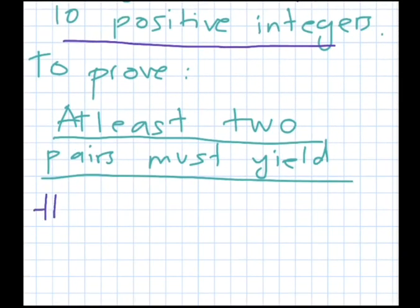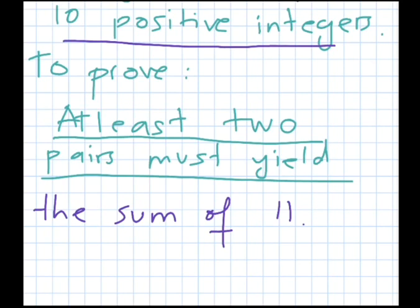We have to prove that at least two pairs must yield the sum of 11. So what we have to prove is: if we choose seven numbers from one to ten, at least two pairs out of them should yield the sum of 11.